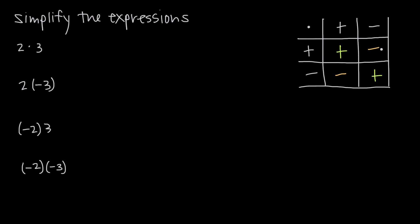Another way to remember this is: if we're multiplying two numbers together and they have the same sign, then the result will be positive. If we're multiplying two numbers together and their signs are different, the result will always be negative. So two different signs give a negative result, and two of the same signs give a positive result — whether that's two positive numbers or two negative numbers being multiplied together.